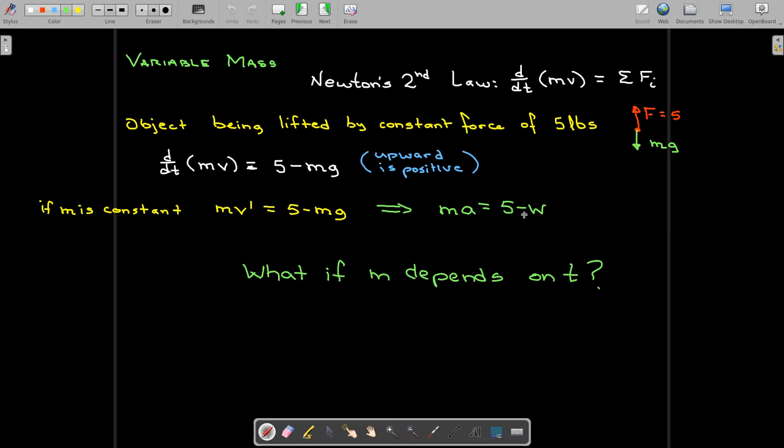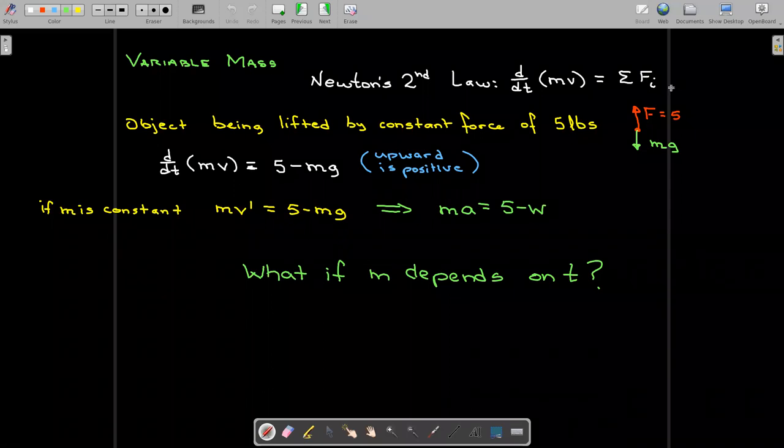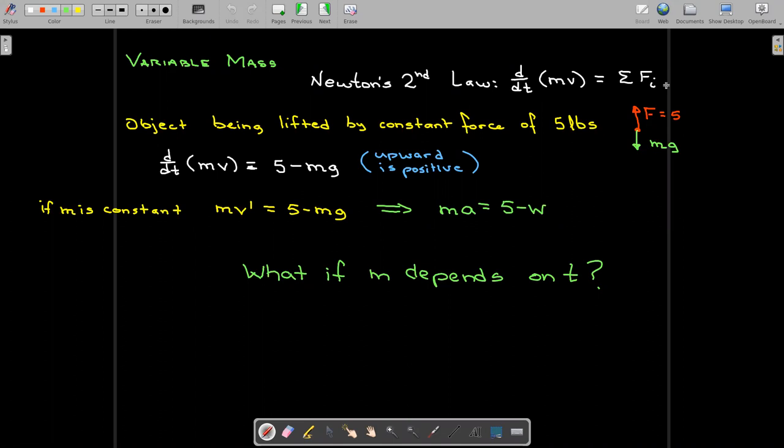So our first example is where you have variable mass. Newton's second law can be interpreted as saying that the time rate of change of the momentum—momentum is mass times velocity—is the net force acting on the system. Now if you have an object being lifted with a constant force, but this object has a constant mass, then the derivative of the momentum is just that constant m times v prime. But what if your mass is changing with time?